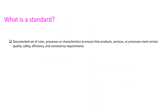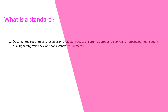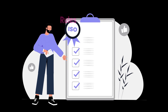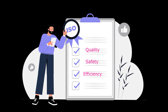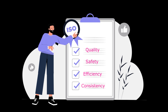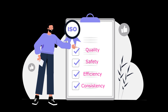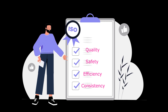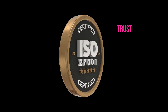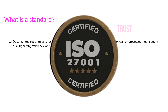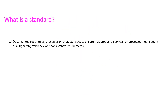Now let us understand what is a standard. It is a documented set of rules, processes, or certain characteristics to ensure that products, services, or processes meet certain quality, safety, efficiency, and consistency requirements. For example, Standard 27001 lays down certain requirements — Requirement A, B, C, D, E, and so on. When an organization is certified by an independent body as ISO IEC 27001, it indicates that the organization fulfills all those requirements, which gives assurance to the stakeholders.